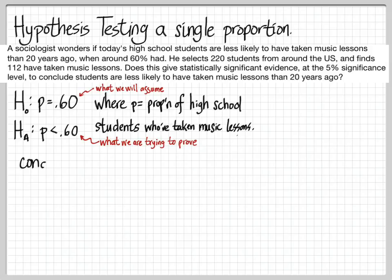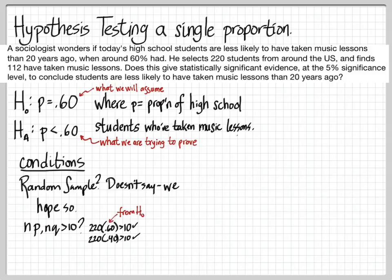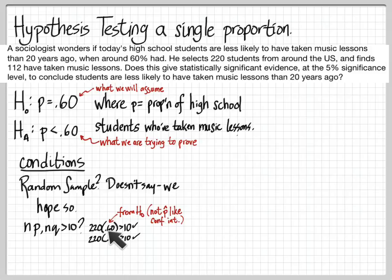Before we do the test, there are always conditions, and the good news is the conditions are pretty much the same as for confidence intervals. Is it a random sample? Well, the problem doesn't say — we'll hope it is; it says 'selected.' Next, np and nq at least 10 — that's what we check for proportions. This is really the only difference between confidence intervals and hypothesis tests: the values here, 60 and 40, are not p-hats. You use the assumption — we're assuming that this is the actual value of p, so we use 60% and 40% here rather than p-hats. For hypothesis tests, you use the null hypothesis values, not p-hats.